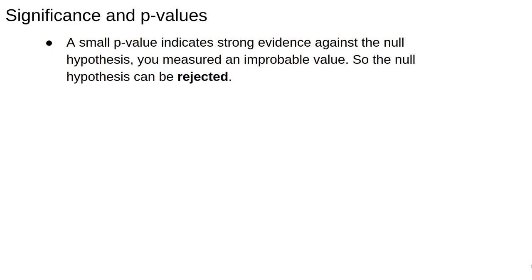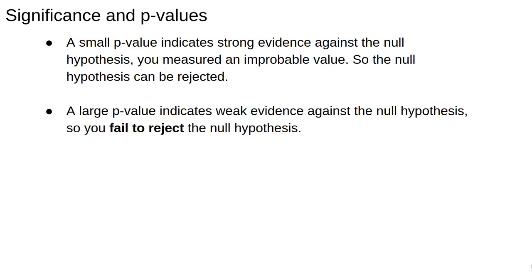Typically, a small p-value implies strong evidence against the null hypothesis. This means, assuming the null is true, that you measured an improbable value so the null hypothesis can be rejected. A large p-value indicates weak evidence against the null, so you fail to reject the null hypothesis. This doesn't mean the null is true, just that we haven't seen any evidence to indicate otherwise.